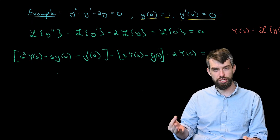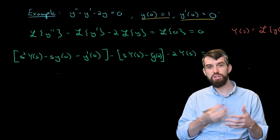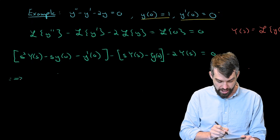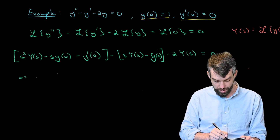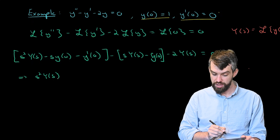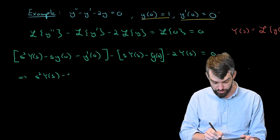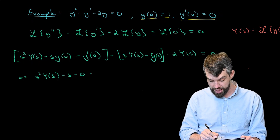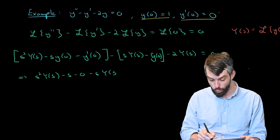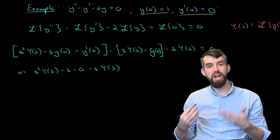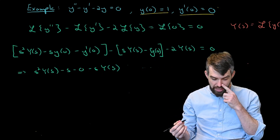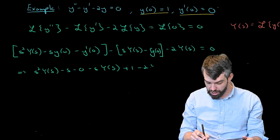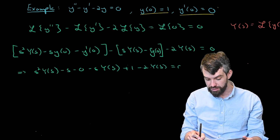Now I plug in the initial conditions y(0) = 1 and y'(0) = 0. This gives s² Y(s) − s·(1) − 0, then subtract s·Y(s) − 1 (two minus signs make a plus), then subtract 2·Y(s), all equal to 0. So the equation becomes s² Y(s) − s − s·Y(s) + 1 − 2·Y(s) = 0.